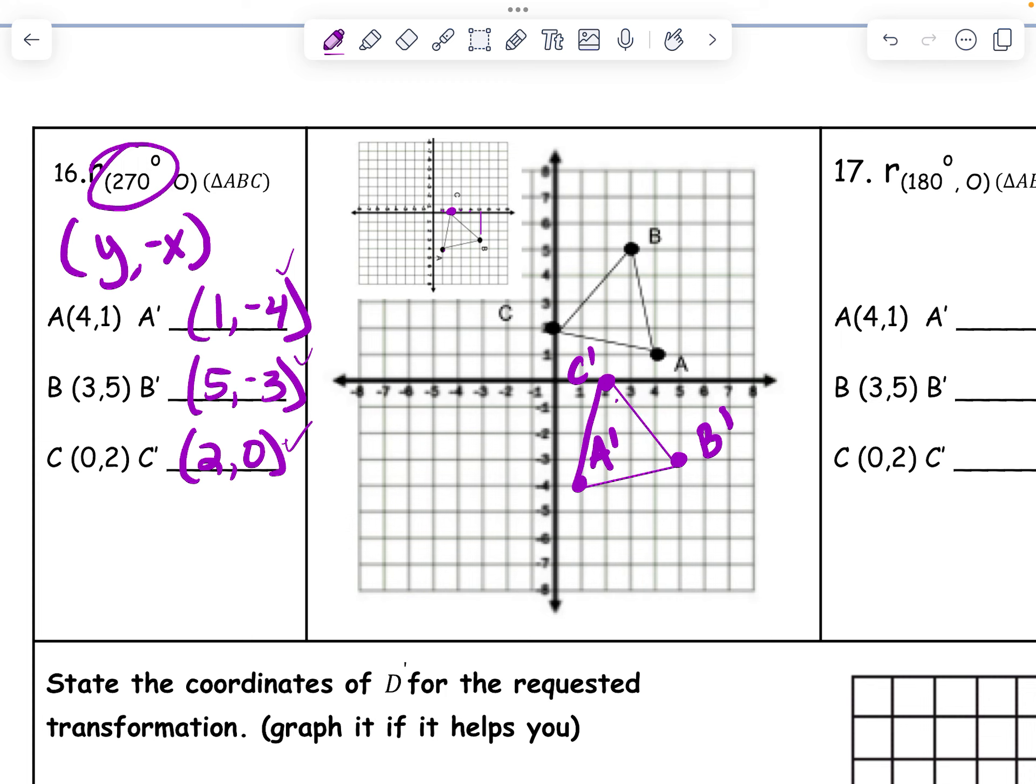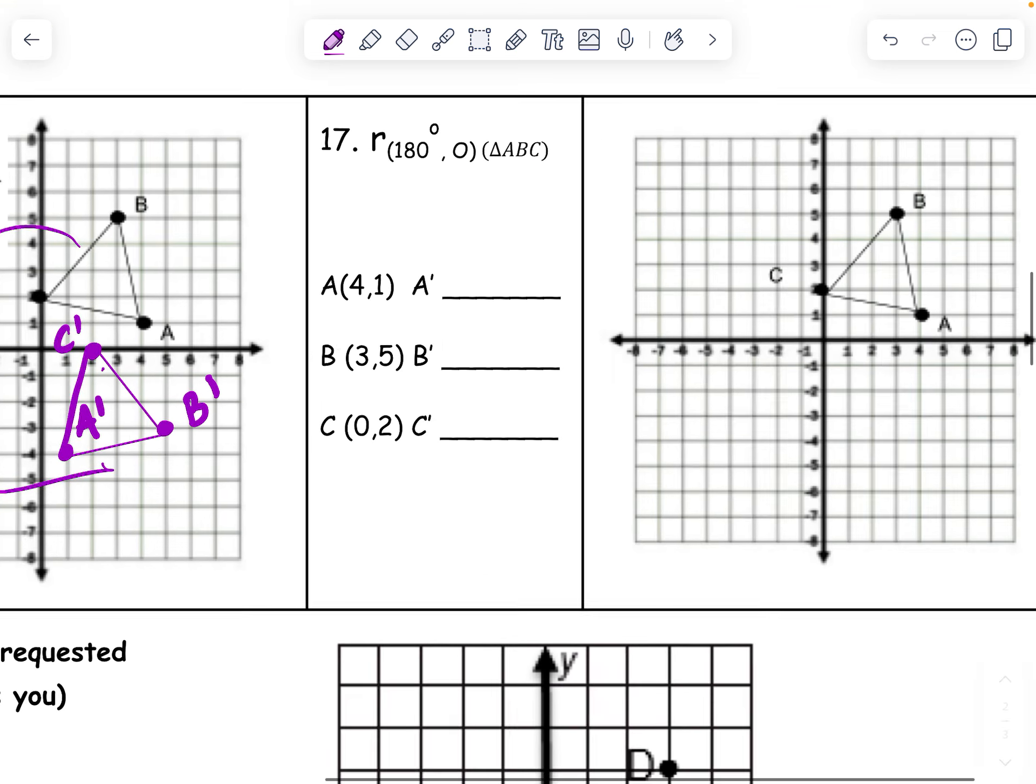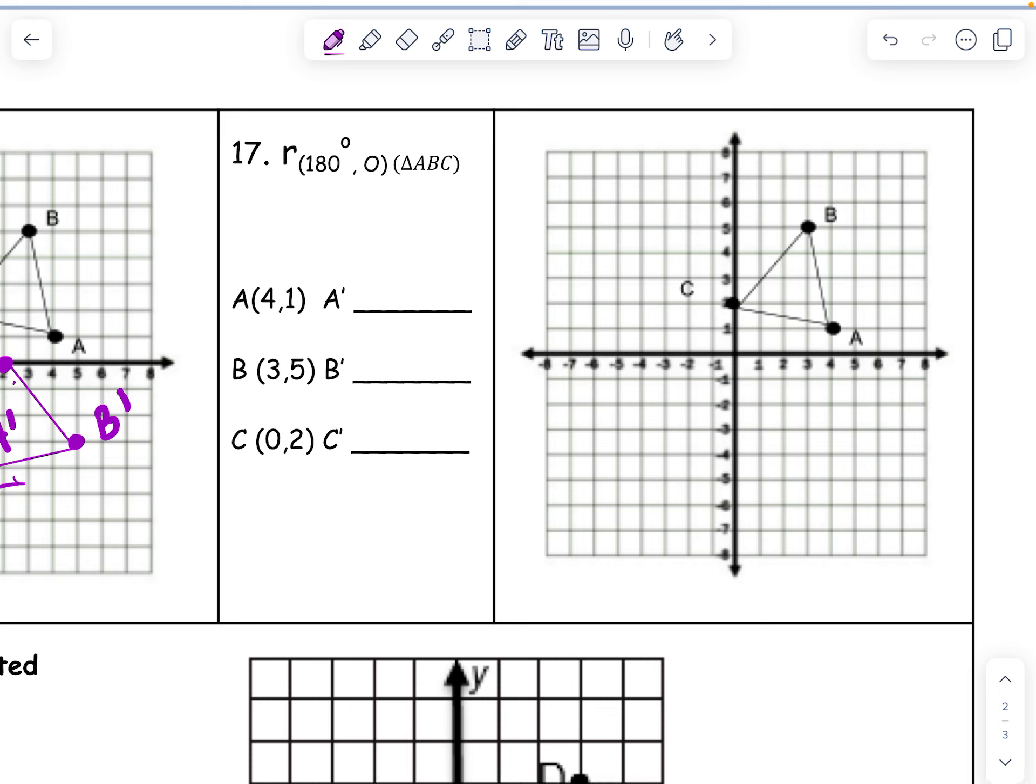You can also kind of think about this. Like, did it go 1, 2, 3 rotations? It sure did. 270. All right, 180 is just make all the signs negative. That is a way easier rule to remember.